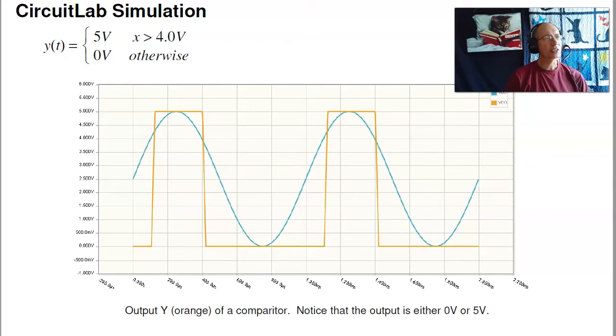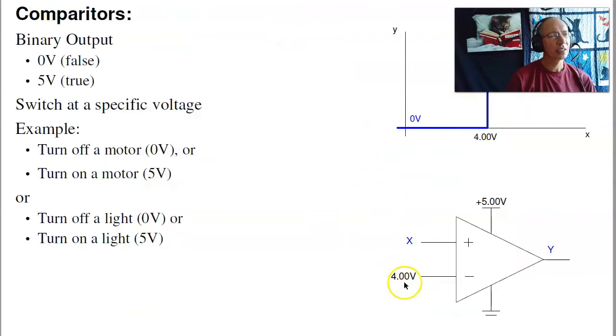You can check that in CircuitLab. If I take that same circuit and have the input be a sine wave, this is a 2.5 volt sine wave centered at 2.5 volts. When it passes through 4 volts, the output slams high. When it passes through 4 volts low, it'll slam low. So notice the output is stuck between 0 volts and 5 volts. That's set by my power supply.